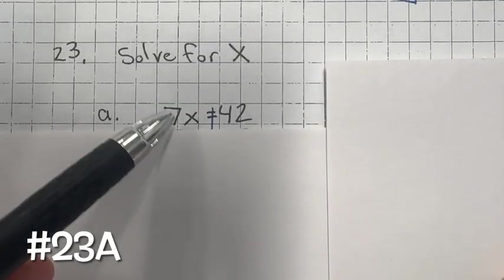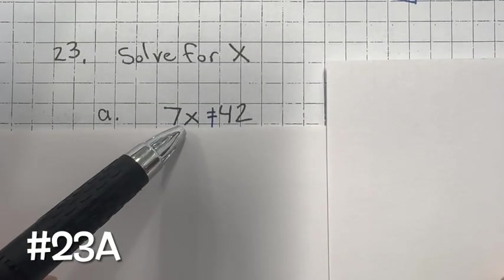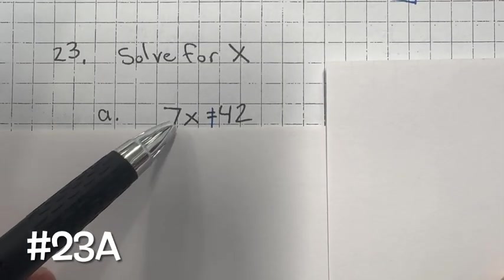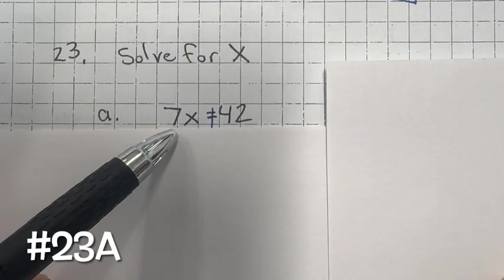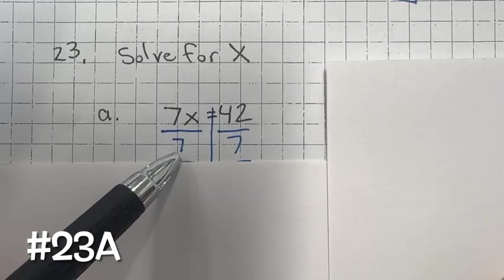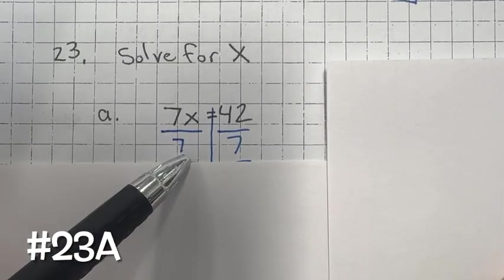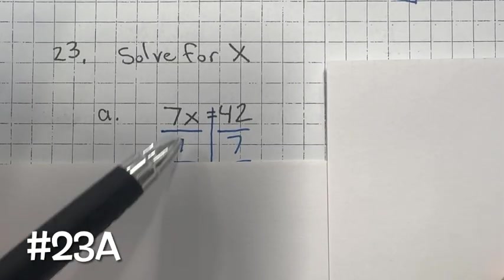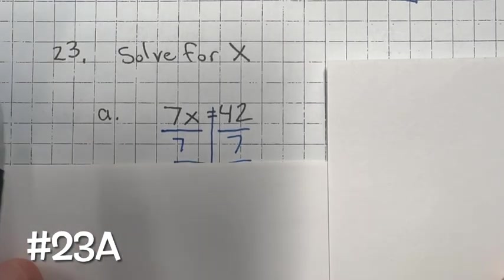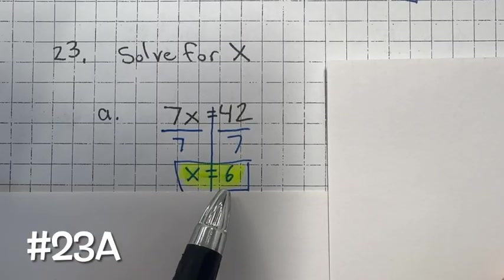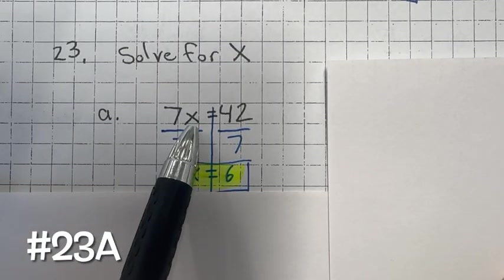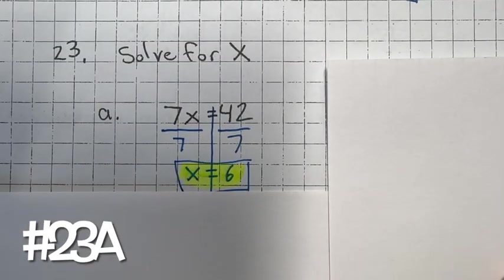For 23a, solve the equation for x. We have 7x — a number and variable together implies multiplication, so the inverse is division. Divide both sides by 7 to get x by itself, since 7 divided by 7 is 1 and 1 times x is x. Then 42 divided by 7 is 6, so x equals 6. Check: 7 times 6 does equal 42.